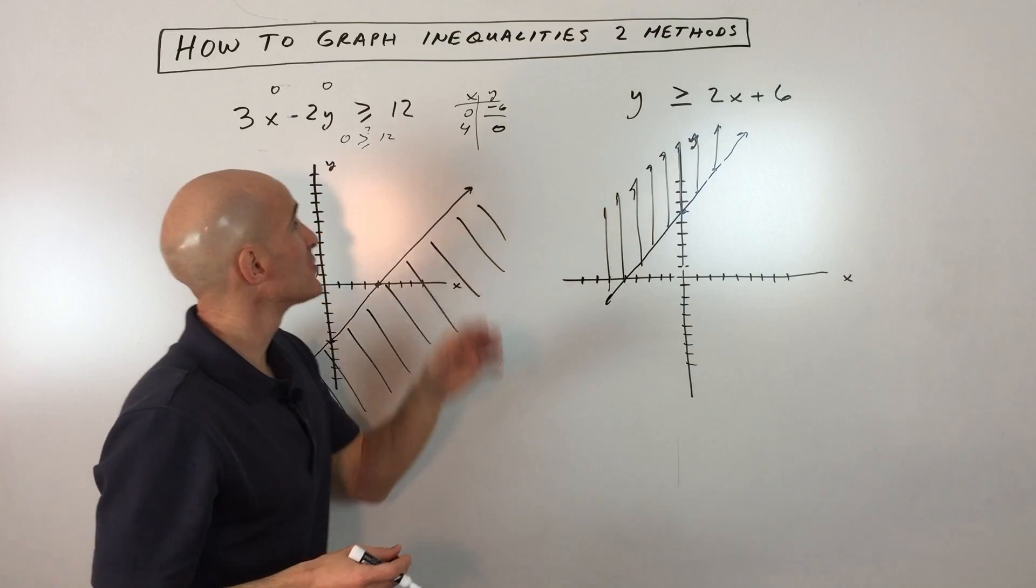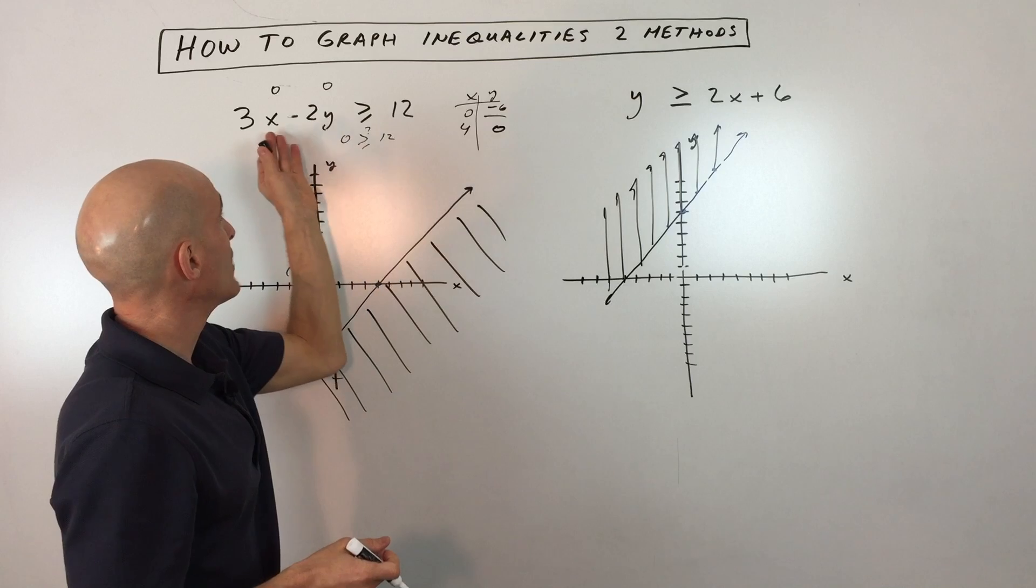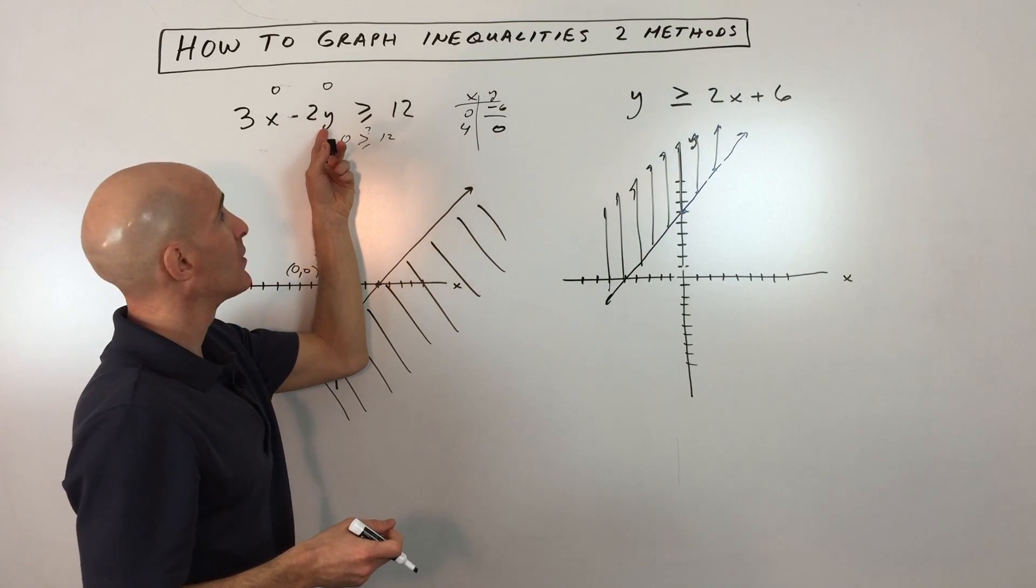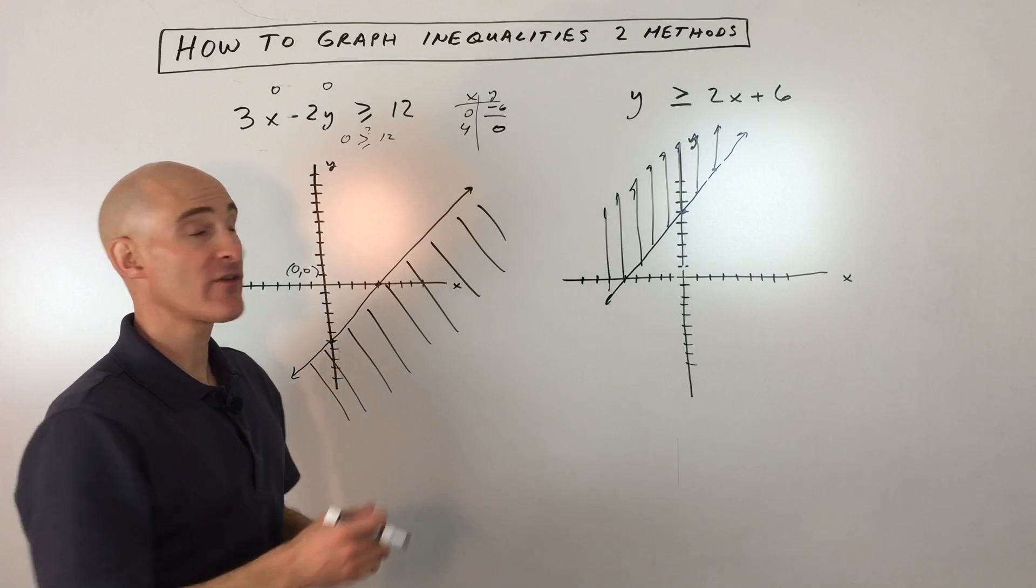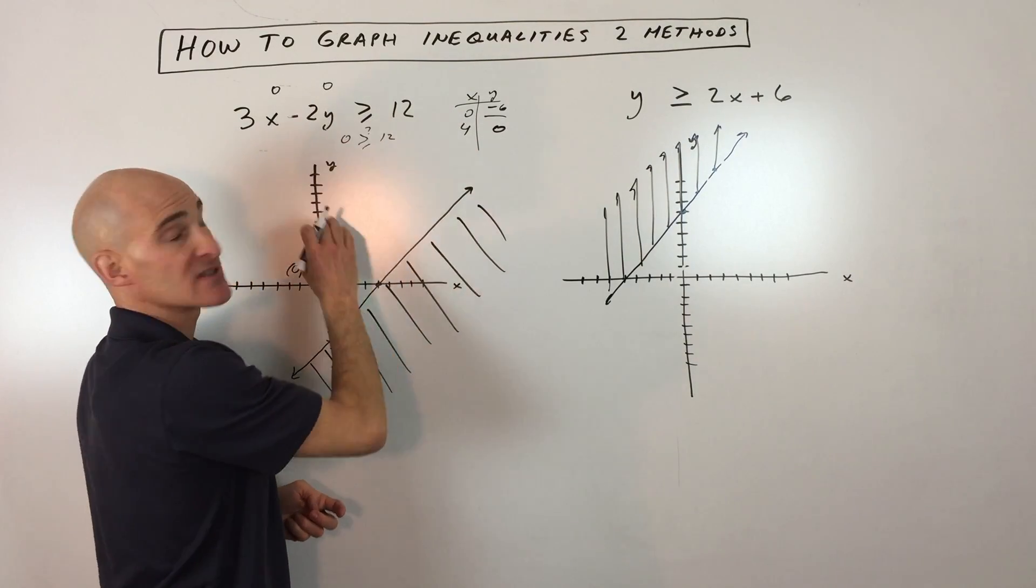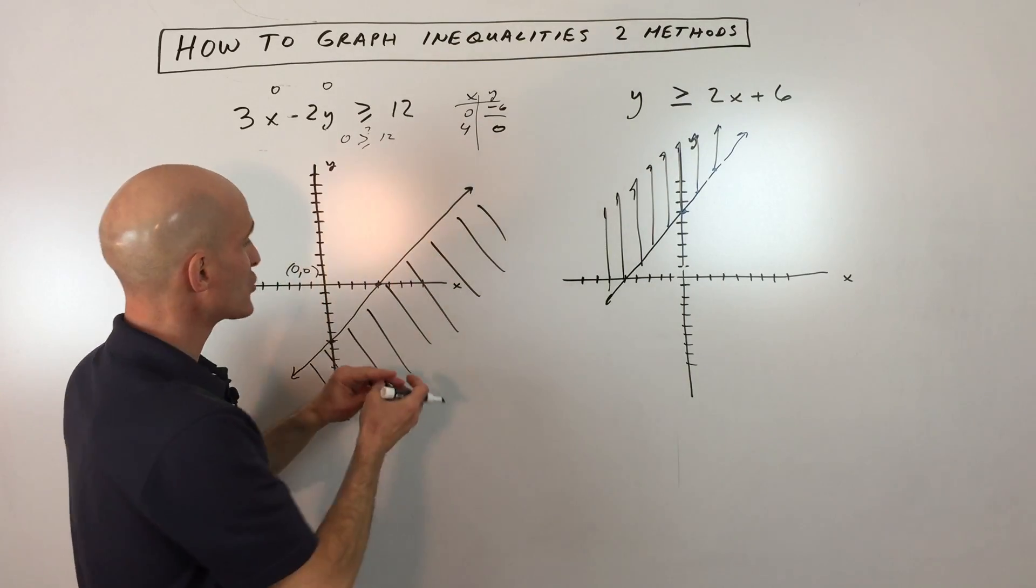Now, sometimes what students will do is they'll say, well, can't I just write this equation like this? Well, definitely. You can certainly do that. All you would have to do is solve for y. And the main thing to watch out for when you're working with inequalities is if you multiply or divide by a negative number, what happens to this inequality sign, it changes direction. And you want to pay attention to that because, here, I'll show you.